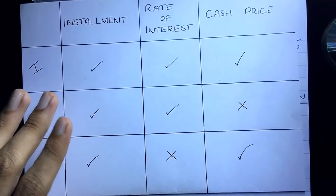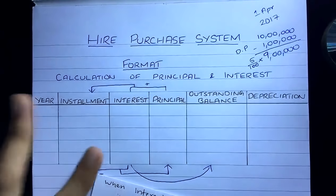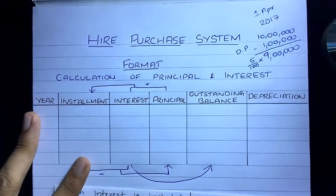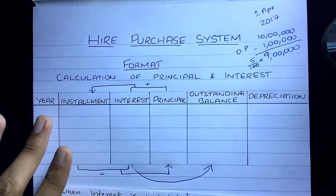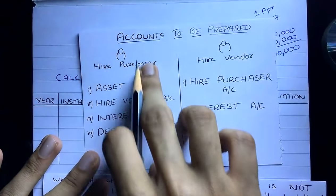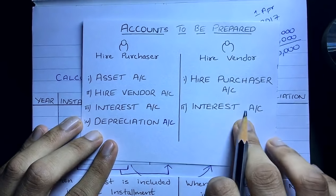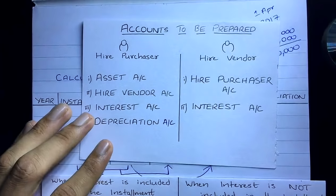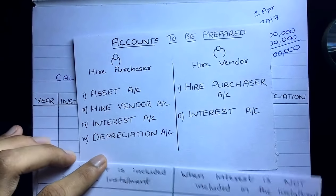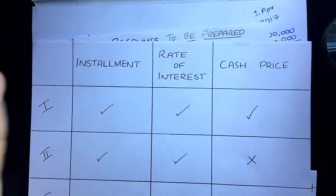To summarize: we saw the three different scenarios, the format of the working note, and the accounts to prepare - asset account, hire vendor account, interest account, and depreciation account in the books of the hire purchaser, and hire purchaser account and interest account in the books of the hire vendor. In the next video we are going to solve a simple problem of the first scenario where all three values are given.